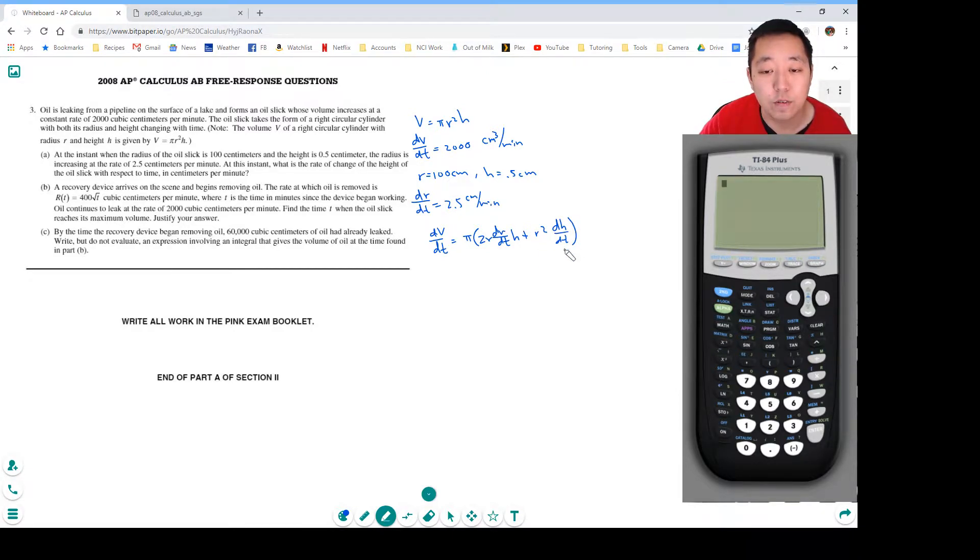And I want to find what dH/dt is, so I'm going to divide by pi, then subtract. So I have 1 over pi times dV/dt. What do I need to do next? I need to subtract all of this: 2R dR/dt H, and then divide it all by R squared, and that will give me dH/dt.